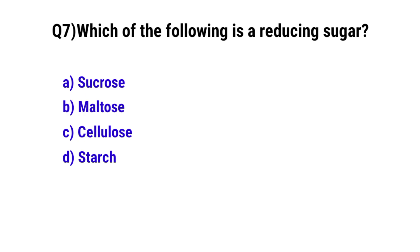Question No. 7: Which of the following is a reducing sugar? The correct option is B: Maltose.